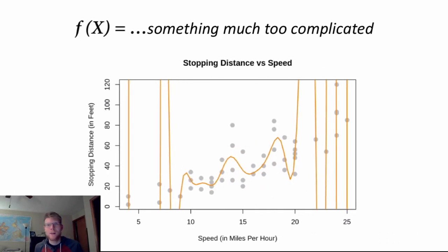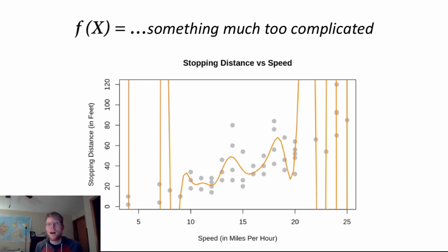The other concern is that we can try to overfit the model by doing something much more complicated than necessary. If I tried to hit every data point or every nuance and bump in the data, I would overfit and end up with a model that's not very useful. This would be f(x) equals something parabolic or even more than parabolic — maybe x to the 15th or 20th power — which is probably not a very helpful equation either.